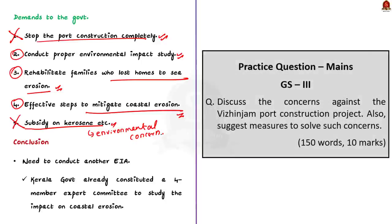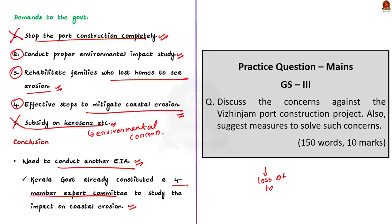There is some confusion about what the environmental impact would be, so conducting another full environmental impact assessment would be wise. In October, the Kerala government constituted a four-member expert committee to study the impact of the project on coastal erosion. Rather than just this study, a complete EIA again would be the best option — otherwise the protesters cannot be satisfied. If protests do not stop, it affects both the fishermen and the project, wasting taxpayer money. With this, let us conclude and move on to the next article.